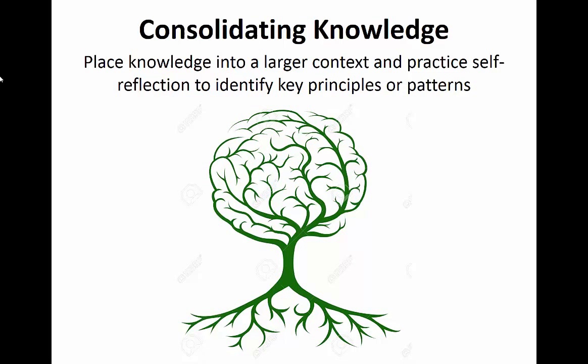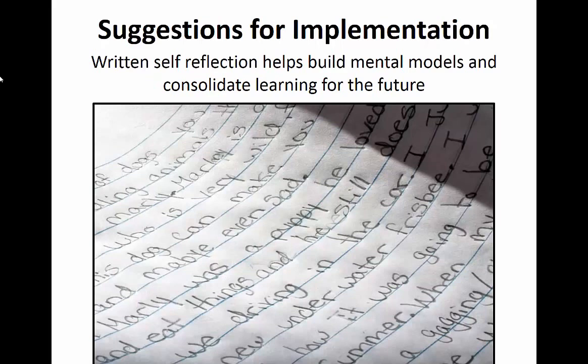The next important principle in cognitive learning theory is that students can achieve cumulative knowledge through placing it into a larger context, self-reflection, and identifying key principles or patterns. Composition pedagogy research has shown that self-reflection in the form of self-assessment, compared against external criteria, is especially effective in promoting the type of reflection that leads to the development of independent thinking. This consolidation of knowledge can occur in the composition classroom via written self-reflections, in which students clearly articulate their experience composing and revising their writing, and come to conclusions about their own writing process.